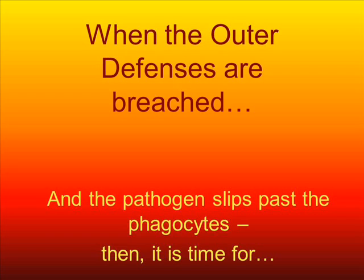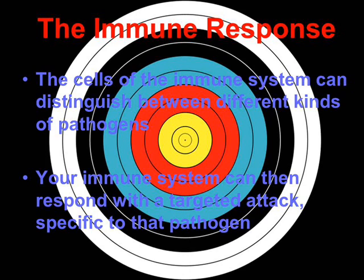The immune response is a very specific and complicated thing, and it's where your immune system really shines. You have multiple different cells in addition to the phagocytes that can actually tell the difference between different kinds of pathogens. If they've seen it before, they'll recognize — this is a flu virus, this is a cold virus, this is a type of bacteria we've fought off before. Your immune system can then go ahead and target a specific attack for that pathogen, knowing what it's vulnerable to and where its weaknesses are. But what happens when the inflammatory response is not enough? If the phagocytes can't absorb it on their own, then we need the next level of defense: the immune response.